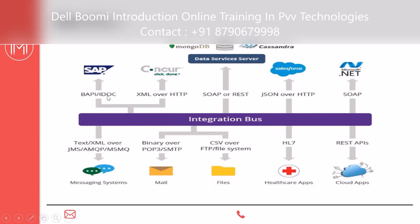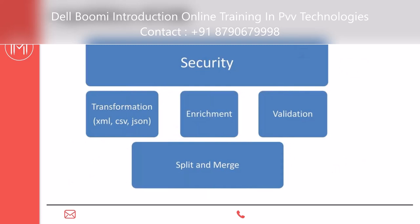The integration bus connects SAP systems and other systems using different formats - HL7, REST APIs, XML, FTP, flat files - on one side, and technologies like .NET on the other side. It handles transformations, enrichment, and validations.